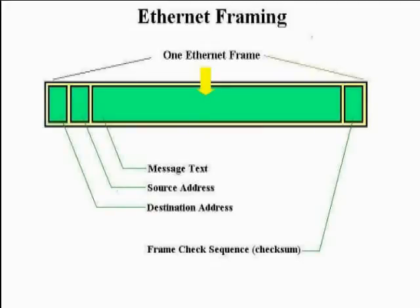In Ethernet framing, the fourth field — the last field shown in the diagram — is a little more sophisticated than telegrams. Instead of just saying 'over,' 'stop,' or 'end of message,' Ethernet designers found it useful to include some kind of error-checking information. So, for example, they'll include a little description of the message just sent. The descriptions are mathematical in nature, but we don't need to do the math.